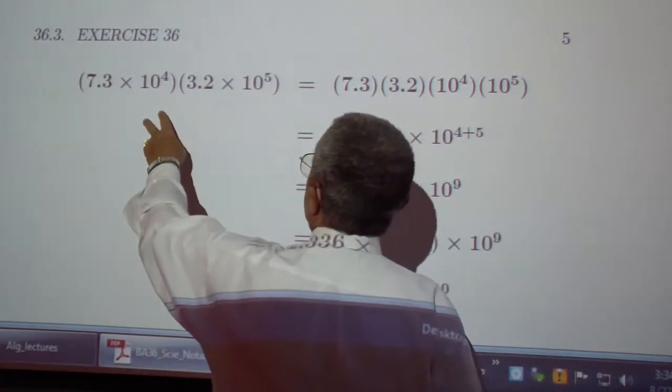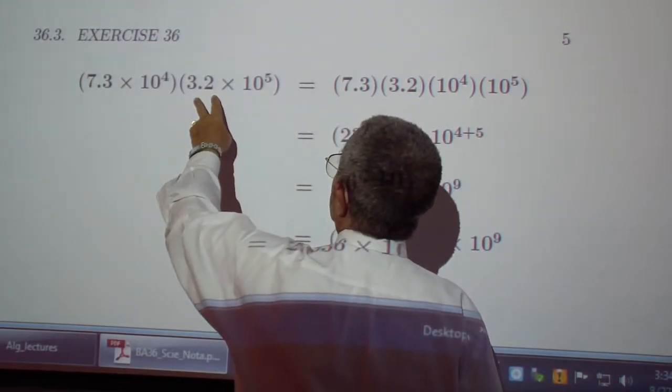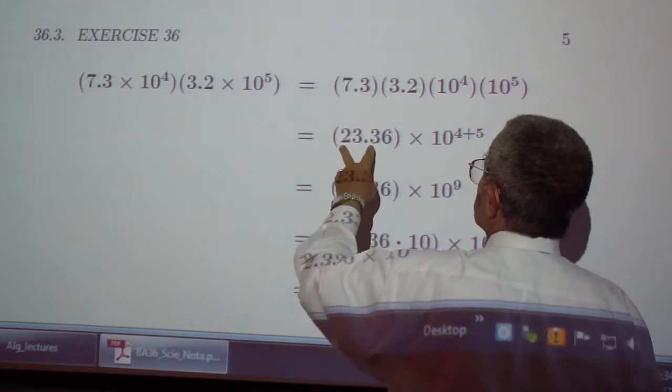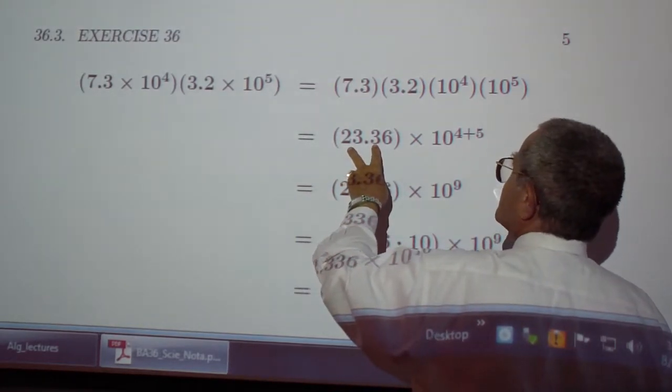Find the product of 7.3 times 10 to the 4 and 3.2 times 10 to the 5. Multiply these two numbers, you get 23.36.